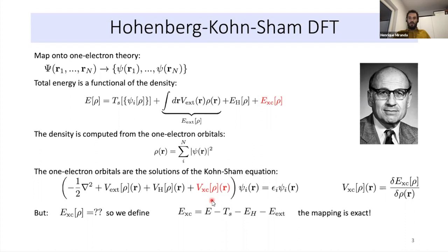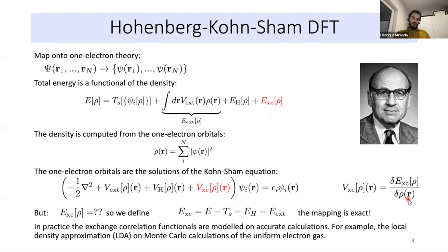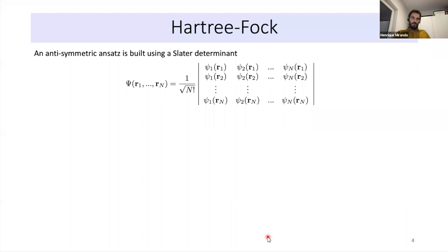The exchange-correlation energy is defined as the difference between the total energy with full interaction minus the terms we know — basically everything we don't have an explicit form for. This mapping is exact, so if we could find a functional form for exchange-correlation, we would find our total energy exactly. The exchange-correlation potential is written as a functional derivative of the exchange-correlation energy. In practice, we approximate it — for example, the local density approximation (LDA) is based on Monte Carlo calculations of the uniform electron gas.